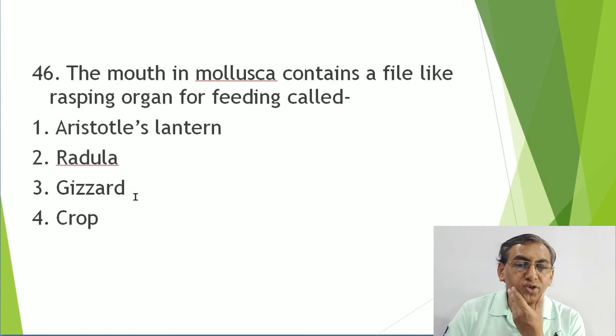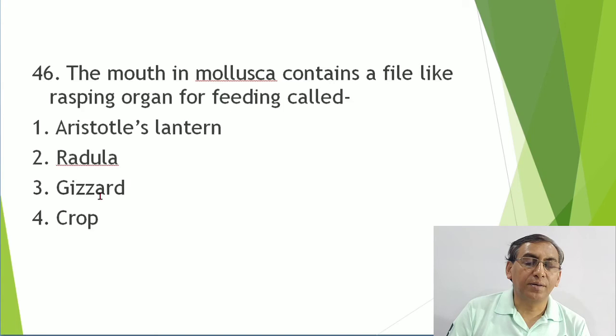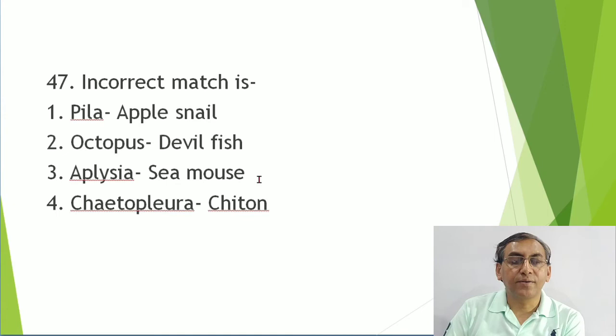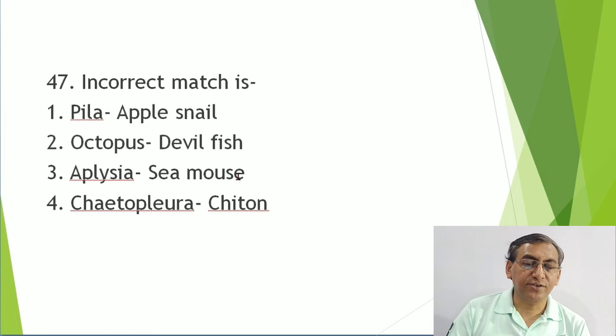Incorrect matches: Pila-apple snail - correct; Octopus-devilfish - correct. Aplysia is sea hare - correct. Sea mouse is Aphrodite, which belongs to Annelida. Chiton (Keto plura) - correct. So what is incorrect: sea mouse (Aphrodite) belongs to Annelida, not Mollusca.